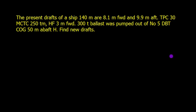Let's discuss problem number 3. The present drafts of a ship 140 meters long are 8.1 meters forward and 9.9 meters aft. TPC is 30, MCTC is 250 tons, and HF is 3 meters forward. 300 tons of ballast was pumped out from number 5 DB tank, COG 50 meters abaft H. Find the new drafts.